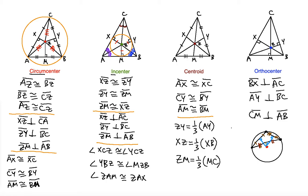For the orthocenter, it is more tricky when it falls outside the triangle and usually involves graph paper. A separate video will be made on how to find the orthocenter outside the triangle, dealing with right angles and related techniques. This is possible whenever the triangle is obtuse.